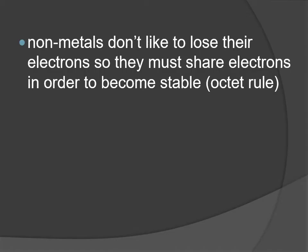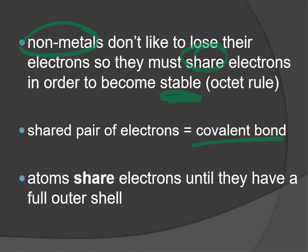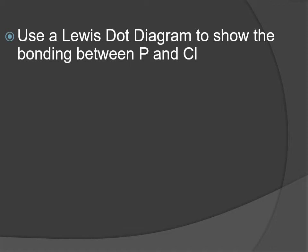Non-metals are found on the top right-hand side of the periodic table. They don't like to lose their electrons - unlike metals, which love losing electrons. Non-metals want to hang onto their electrons and even gain more. They still want to become stable with a full outer shell, but they won't give electrons away. Instead, when combining with another non-metal, they share electrons - a shared pair called a covalent bond. This is what holds molecules together: atoms share electrons until they have a full outer shell.